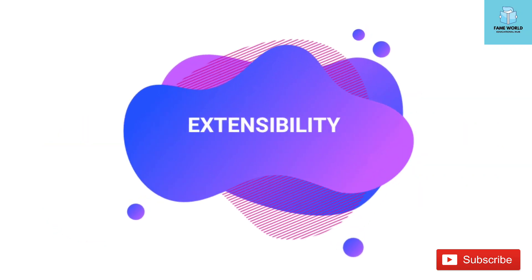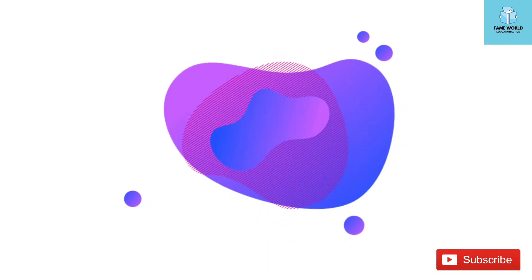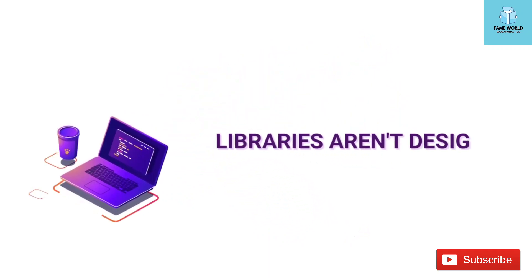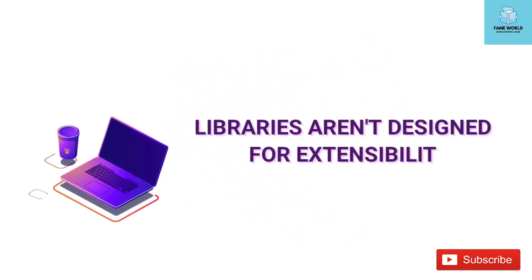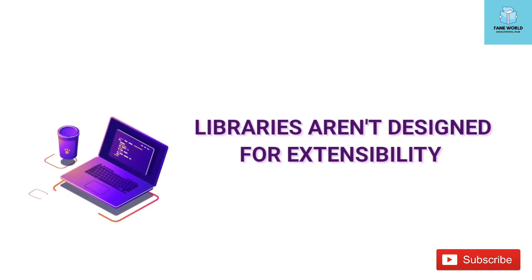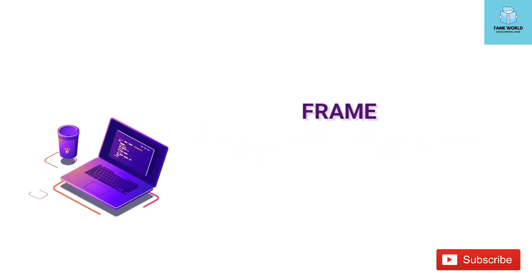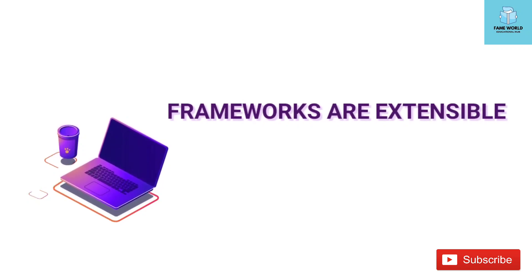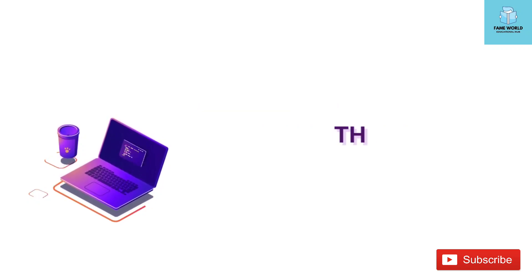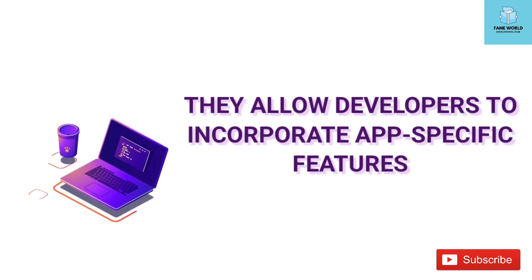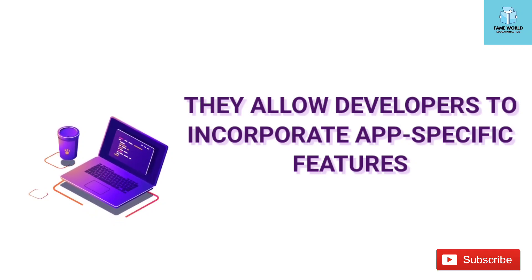Number 5: Extensibility. Generally, libraries are not designed for extensibility; they are designed to accomplish a specific purpose. Frameworks are built to be extensible, which allows developers to incorporate app-specific features without modifying the framework's source code and work within the same framework.